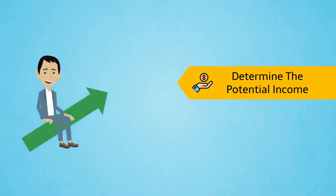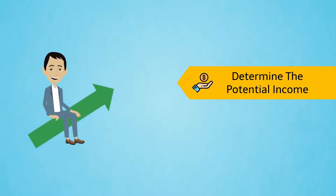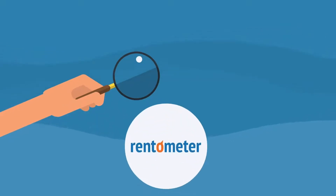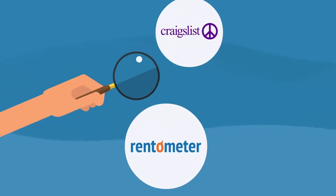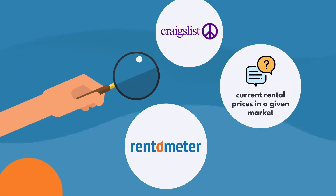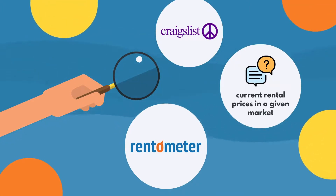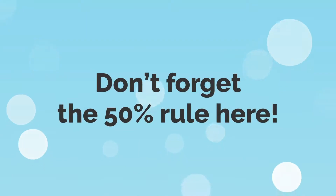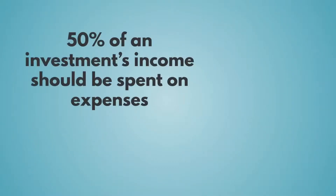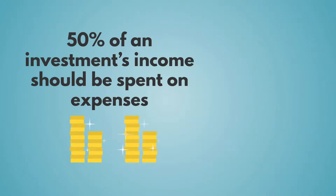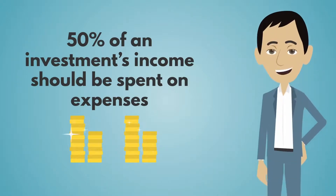When you find a promising property, tip six is to determine its potential income. Sites like Rent-O-Meter and Craigslist are helpful resources to look at current rental prices in a given market. Don't forget the 50% rule here — remember, 50% of an investment's income should be spent on expenses, not the mortgage. The 50% check is a good rule of thumb for beginner investors who are looking to remain conservative.